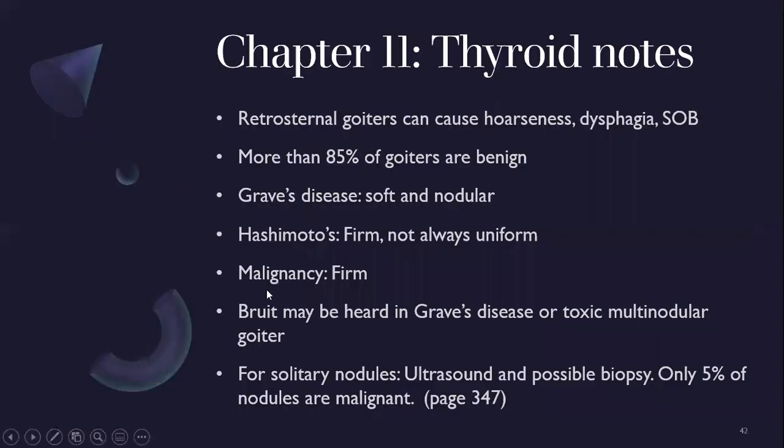Retrosternal goiters can cause hoarseness, dysphagia, or shortness of breath because they grow inward toward the larynx. More than 85% of goiters are benign. In Graves' disease the thyroid is soft and nodular; in Hashimoto's disease it's firm but not uniform throughout. Malignancy typically presents as hard to the touch. Bruits are heard in Graves' disease or toxic multinodular goiters. For solitary nodules, ultrasound and possible biopsy are indicated; only 5% of nodules are malignant.